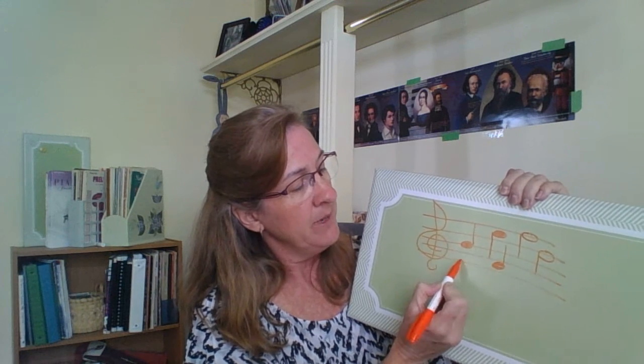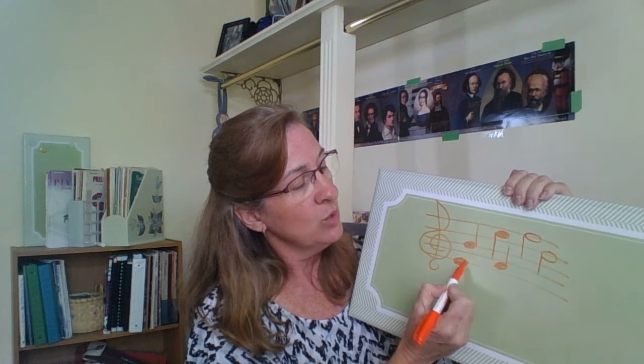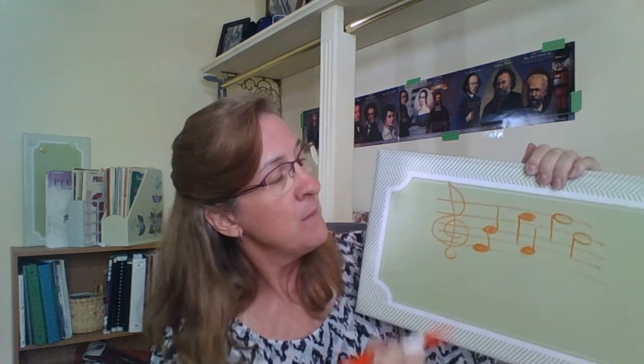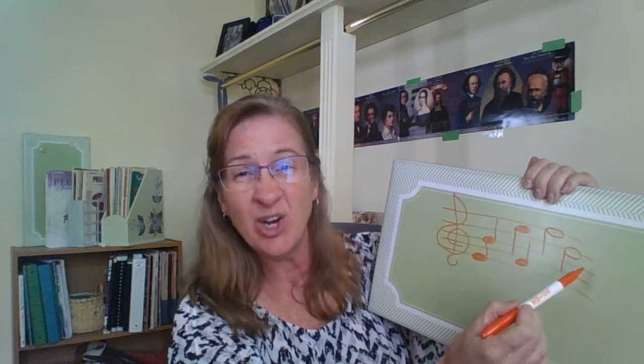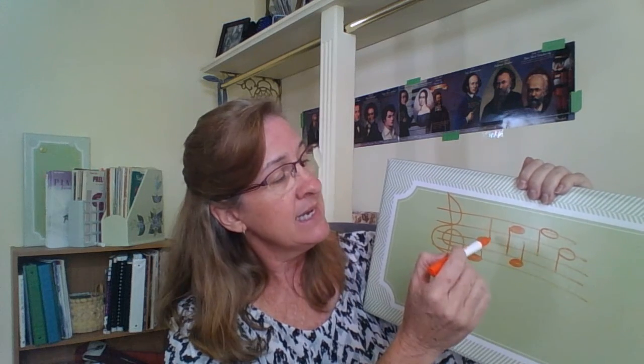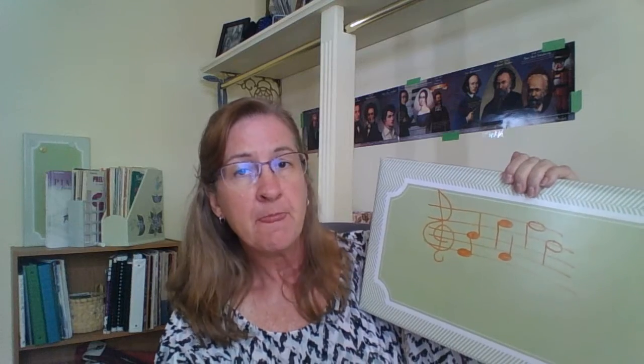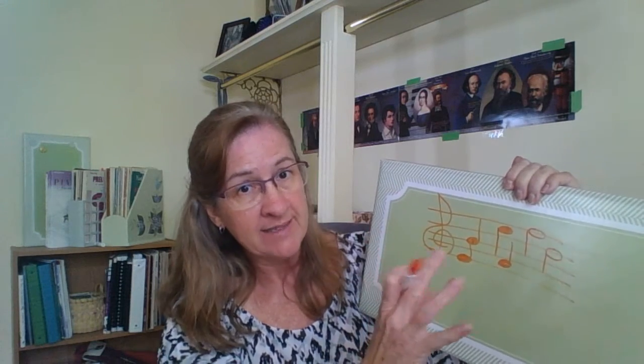The general rule of thumb is: the middle line can go either way. Anything above the middle line will have a stem that goes down. Anything below the middle line will have a stem that goes up. What is happening is that the stems are trying to stay within the lines of the staff.